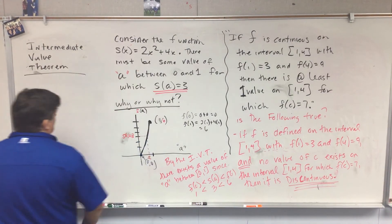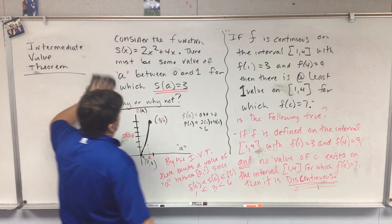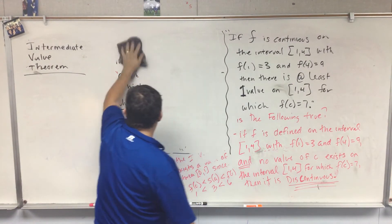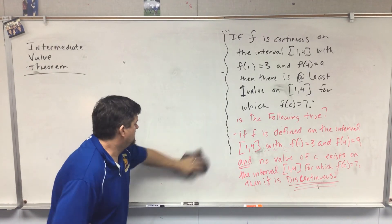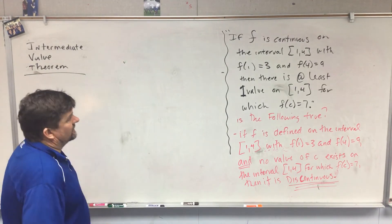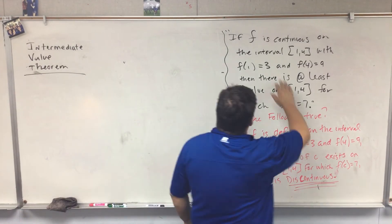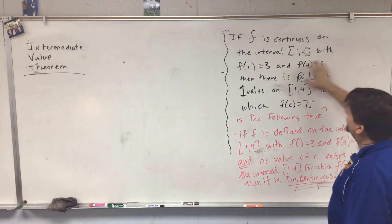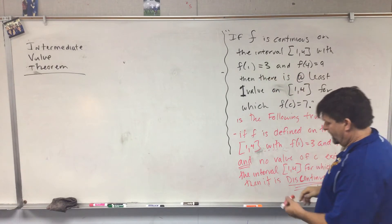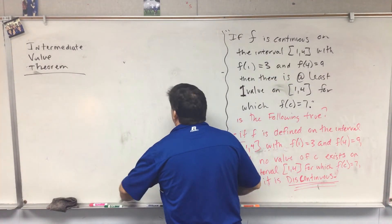We're going to do some more of those because they love to ask this type of question on you guys. So let's look at a counterexample. If f is continuous on the interval from 1 to 4, with f(1) equal to 3 and f(4) equal to 9, let's just draw this out as we go.